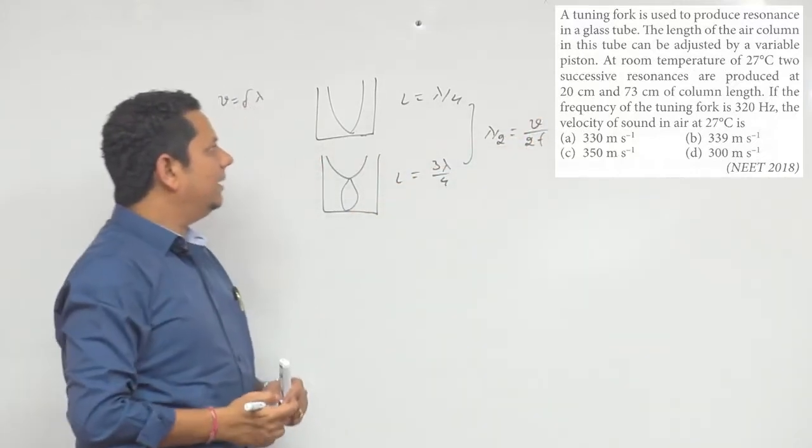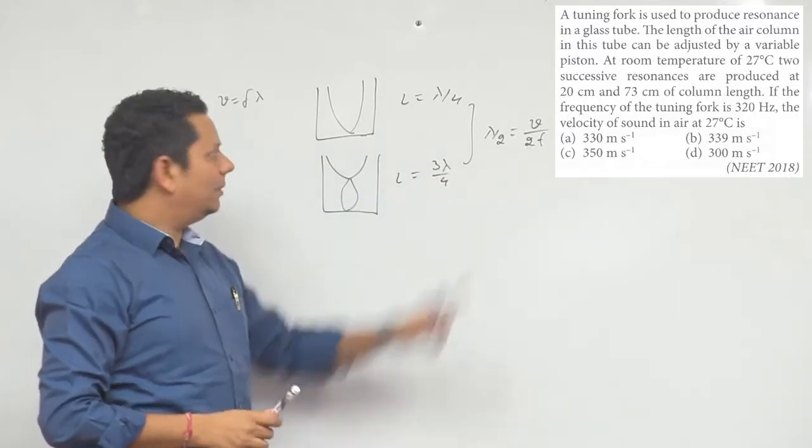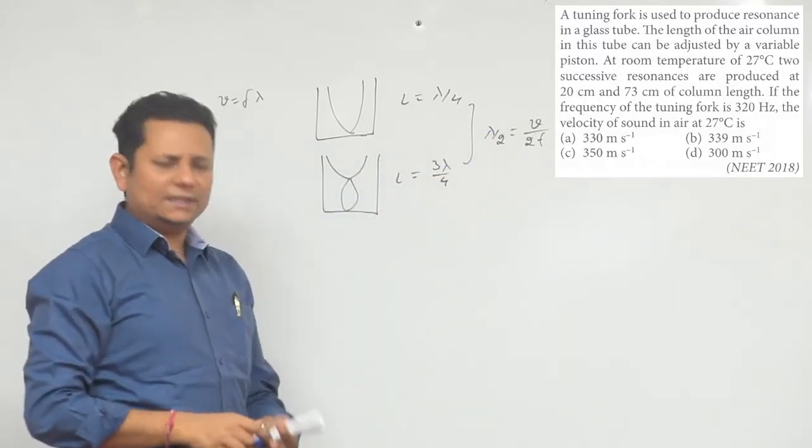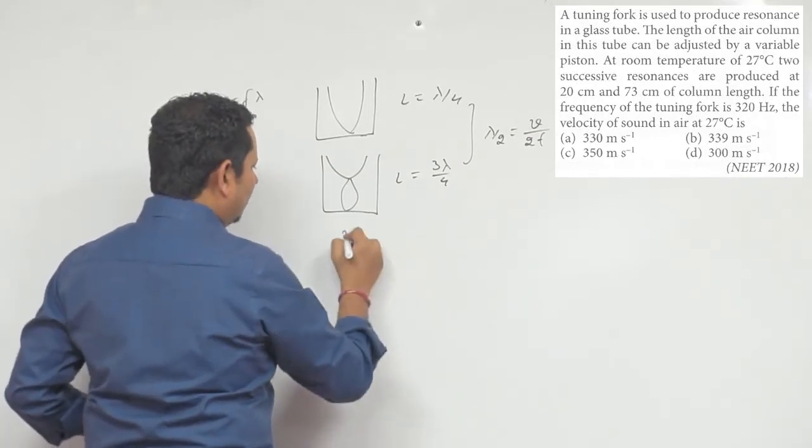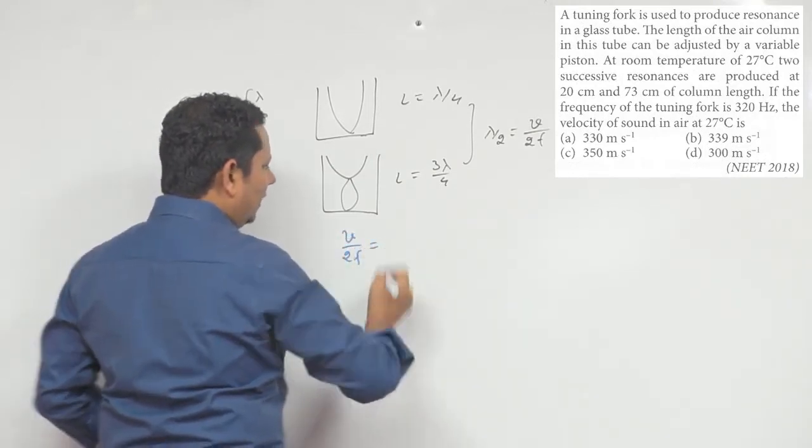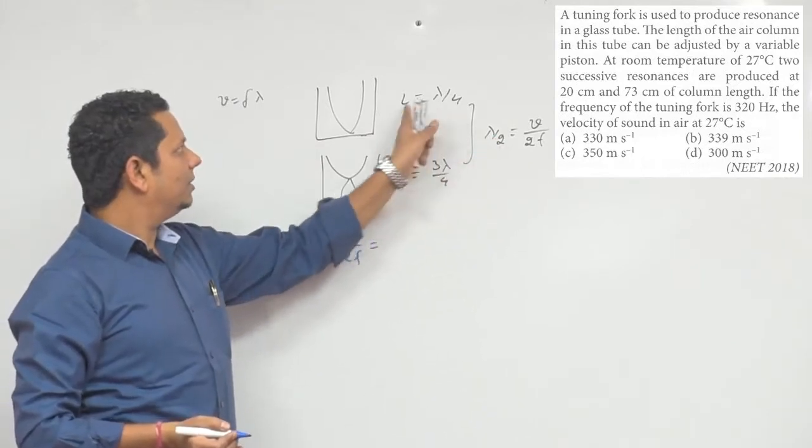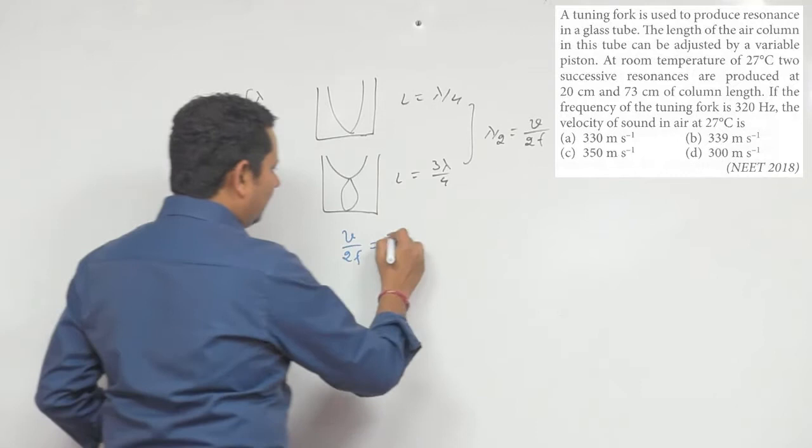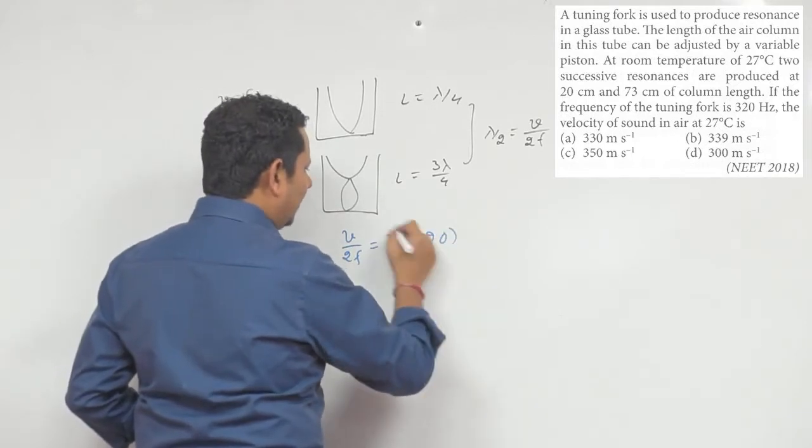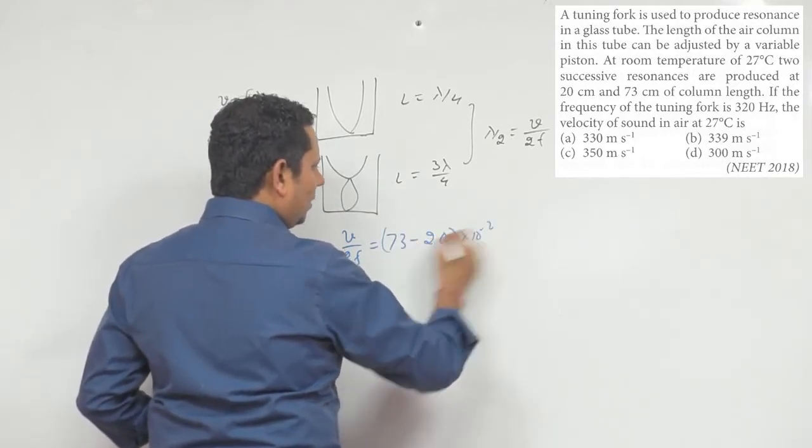So in this case, we have the value of the difference. We have v divided by 2f. This difference is the length difference: 73 minus 20 cm, so this is equal to v over 2f.